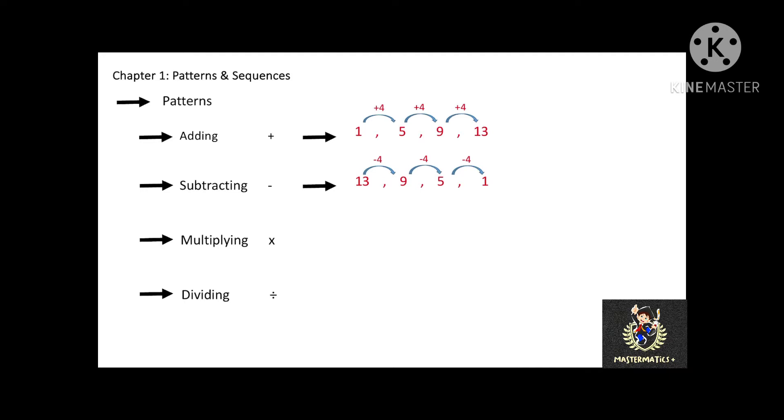How about multiplication? In this set of number 1, 4, 16, and 64, it is multiplying by 4 to the previous number.